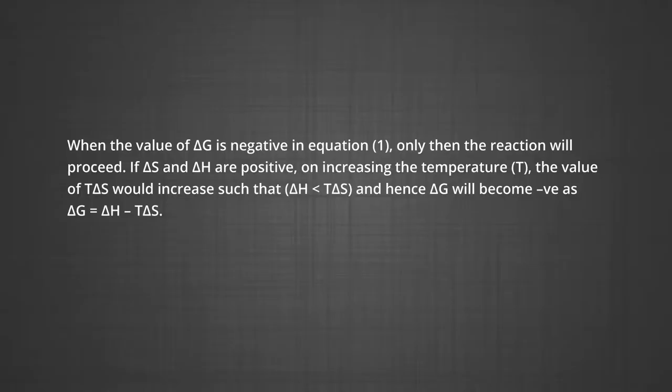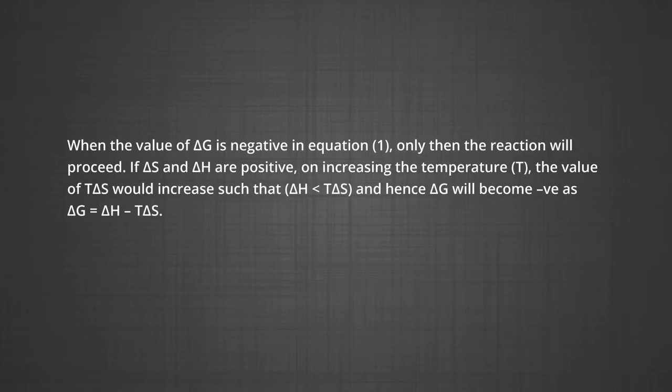From these facts, we can make the following conclusions. When the value of ΔG is negative in equation 1, only then the reaction will proceed. If ΔS is positive, on increasing the temperature T, the value of TΔS would increase such that ΔH < TΔS, and hence ΔG will become negative as ΔG = ΔH − TΔS.